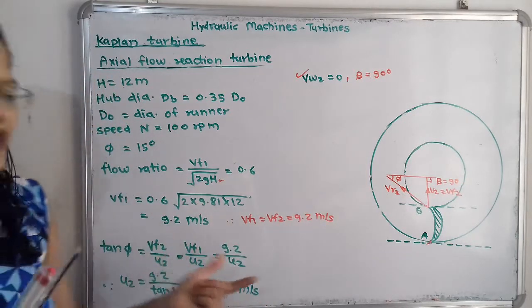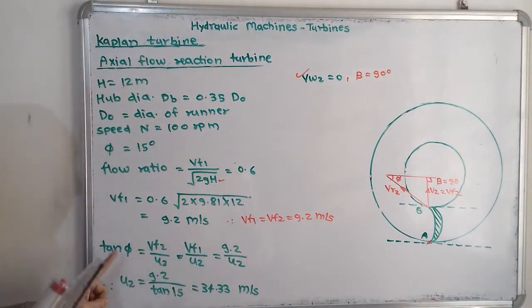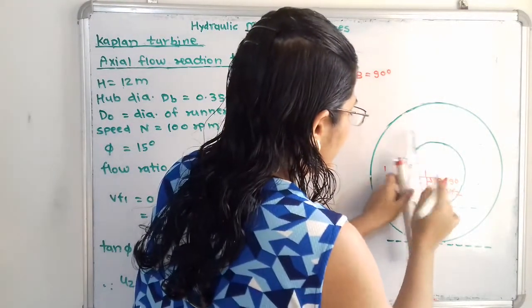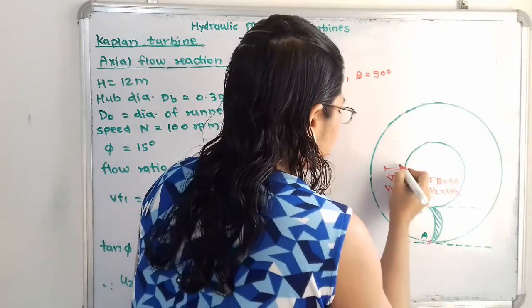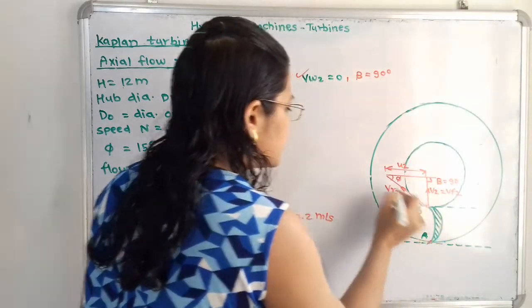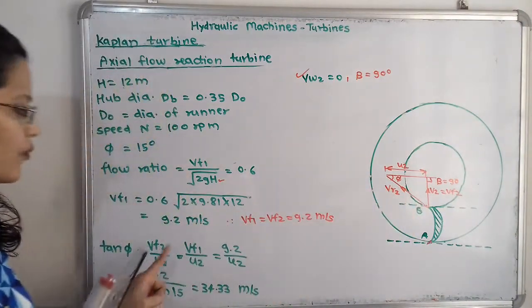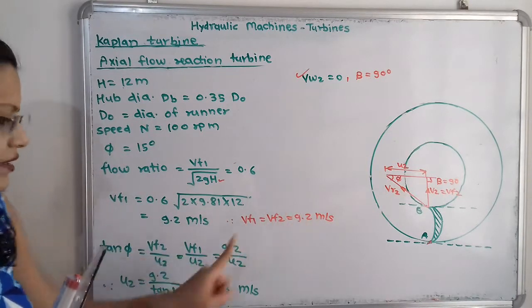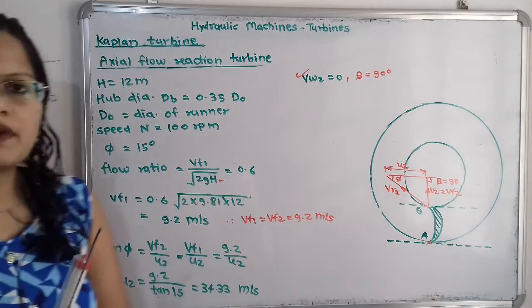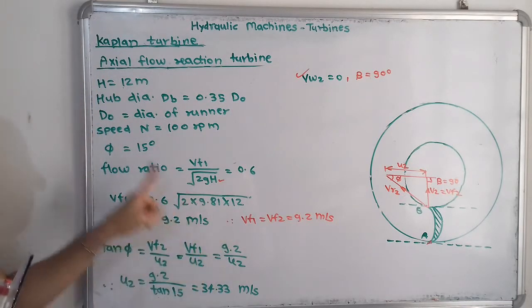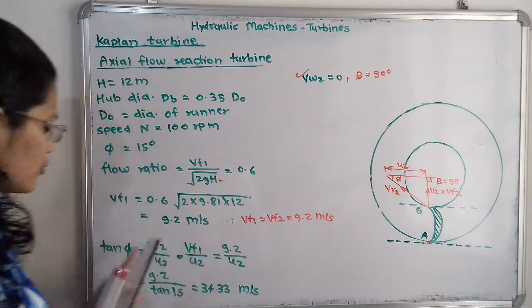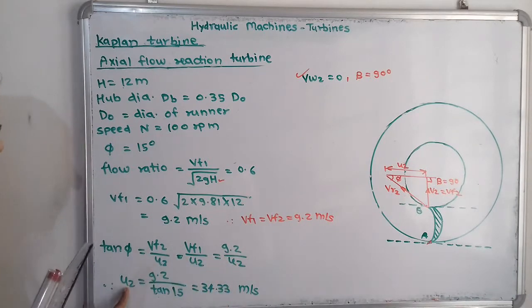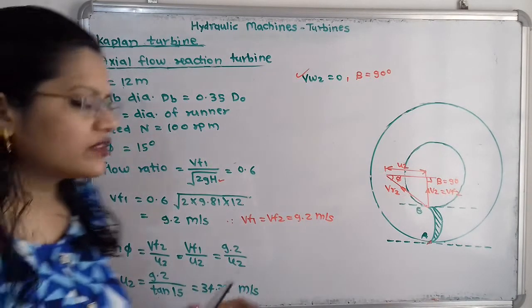From the velocity diagram triangle, tan(phi) = vf2 / u2. Substituting, tan(15°) = 9.2 / u2, which gives u2 = 34.33 m/s.